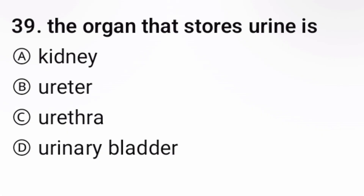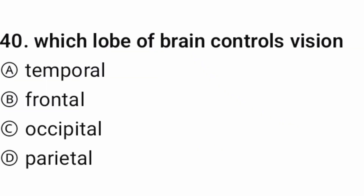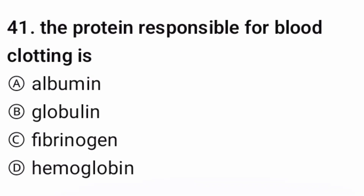Question 39: The organ that stores urine is — the correct option is D, urinary bladder. Question 40: Which lobe of the brain controls vision? The correct option is B. Question 41: The protein responsible for blood clotting is — the correct option is C.